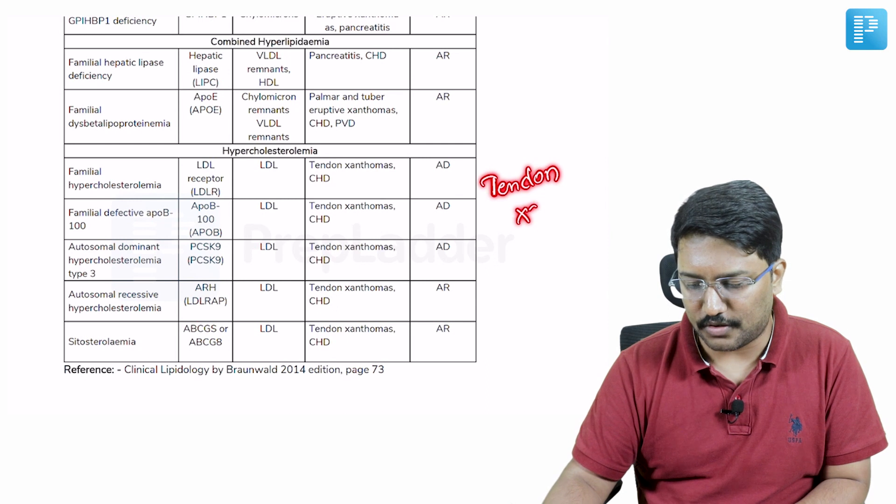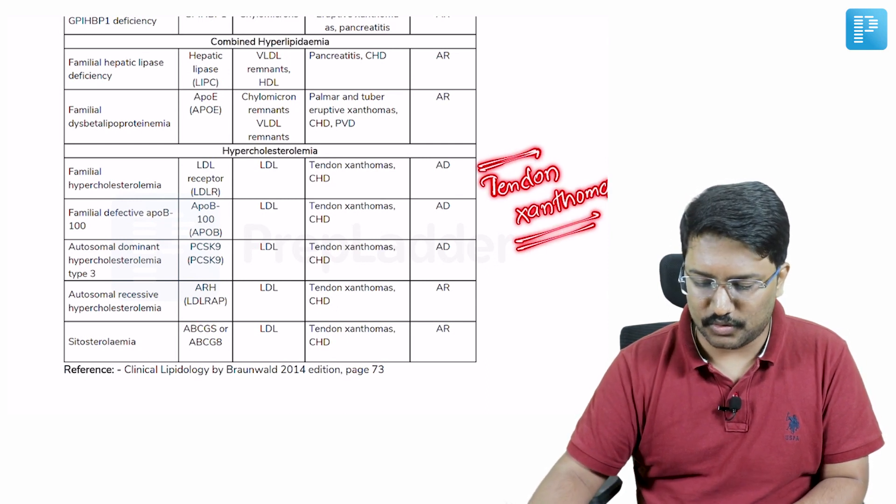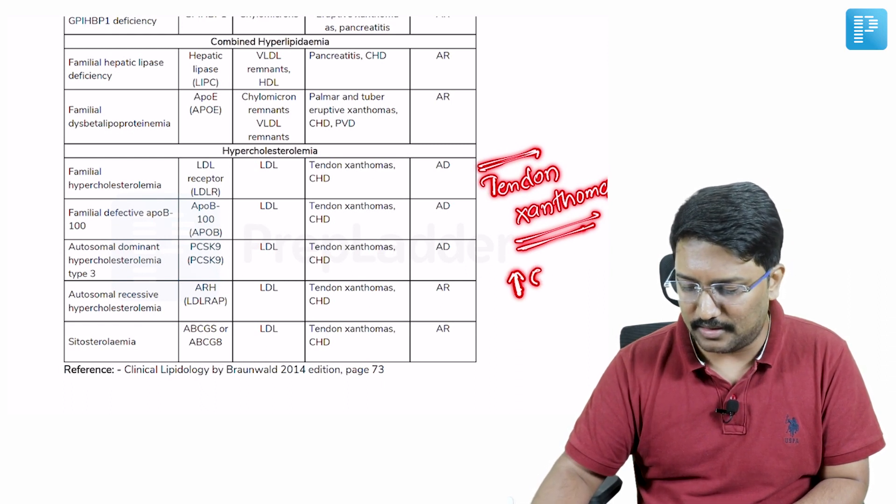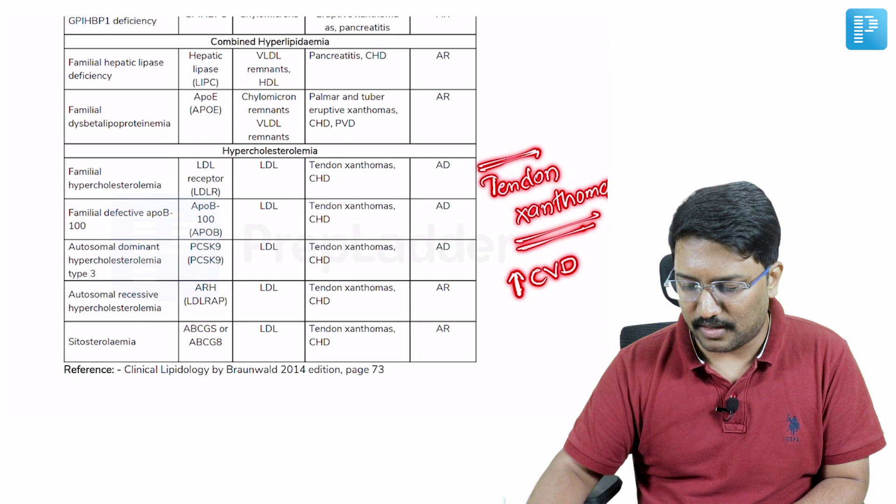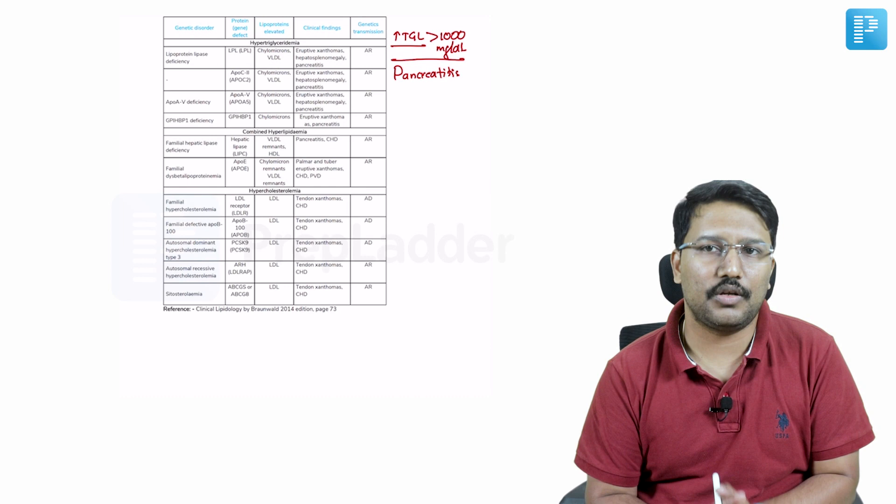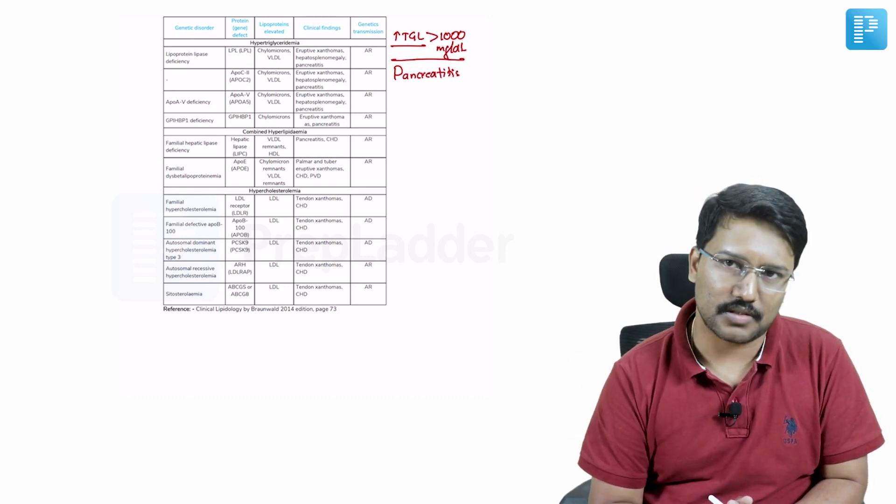LDL is the one which is elevated and the characteristic finding of hypercholesterolemia is tendon xanthomas. That again is an important MCQ. Tendon xanthomas are seen in which of the lipid disorders? It is mostly hypercholesterolemia. Tendon xanthomas and obviously LDL elevated means increased coronary vascular disease risk. So this is how simplistically you can learn about a lot of information in one place using the treasures.